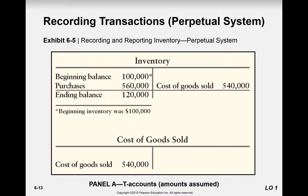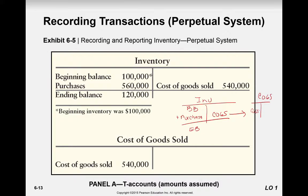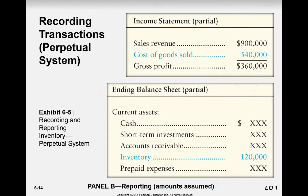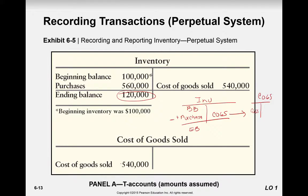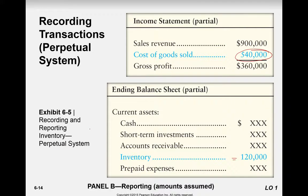Now looking at the T-accounts for these transactions: a useful formula is beginning balance plus purchases less cost of goods sold equals ending balance. Cost of goods sold flows into the income statement as a debit. Additions to inventory come through purchases; reductions go through cost of goods sold. Our inventory balance was $120 and our cost of goods sold was $540, taken directly from our T-accounts and now reflected in our partial income statement and balance sheet.